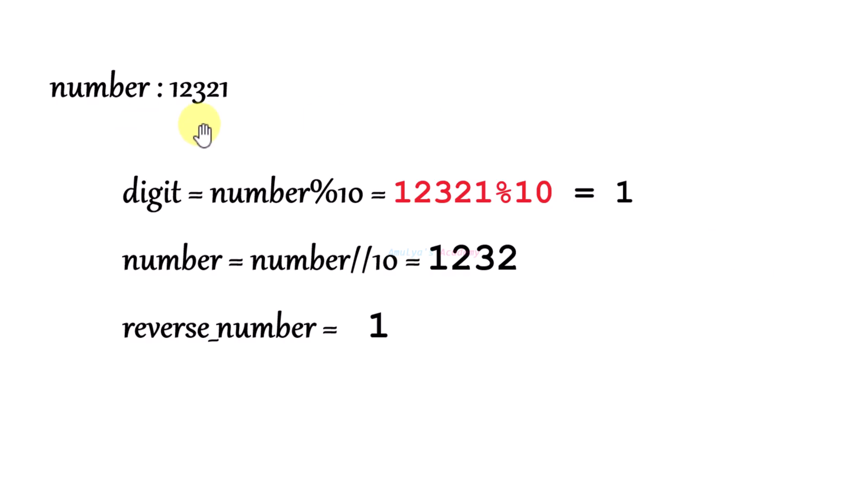The first example number is 12321. To check whether a number is a palindrome, we will use the half reverse approach — we reverse the second half of the number and then compare it with the first half. To reverse a number, we need to extract its digits separately, and for that we will use the modulo operation.